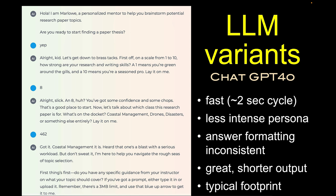I've tried various variants, since PlayLab allows you to use different large language models. For example, this is the case with ChatGPT 4.0 — these numbers and things change all the time. The ChatGPT variants tend to be very fast. The persona of the hard-boiled crime fiction character wasn't very front and centered, just a little bit, not nearly as much as some of the other models. I also found the formatting of responses was sometimes inconsistent. In general, the output was pretty short — great, but relatively short and tight, which might be what you'd like. It has a typical carbon footprint of most of these very carbon-intensive models.